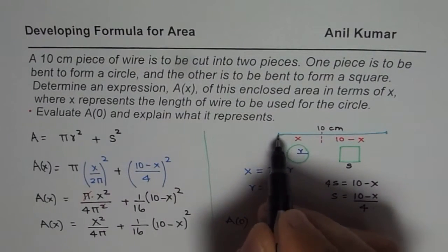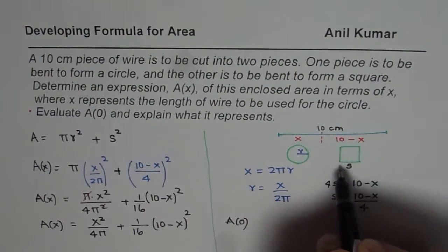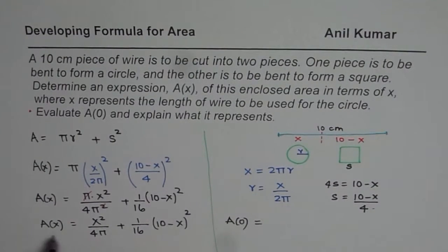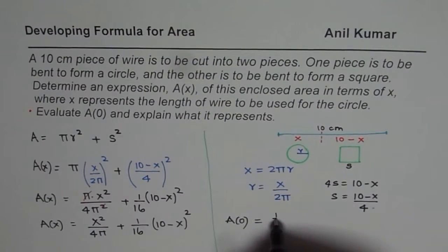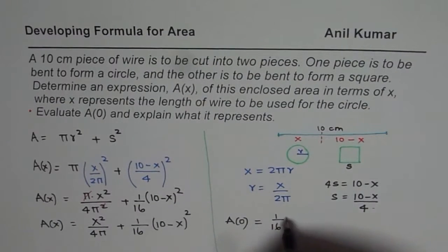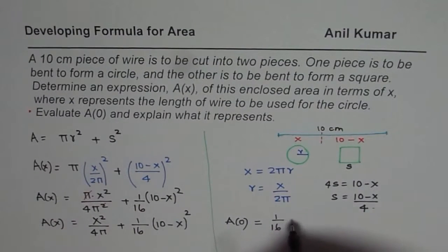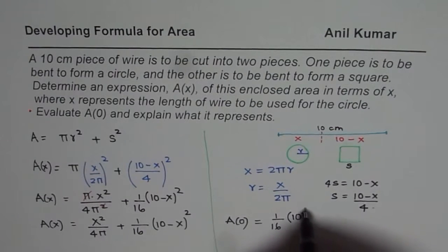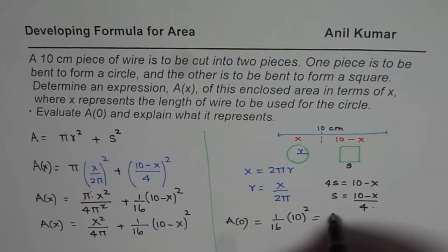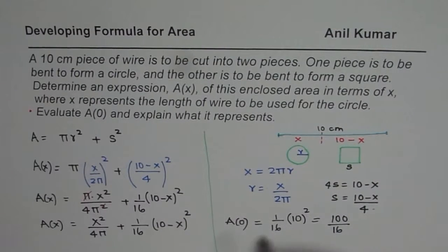So with x is zero, what do we get? The area will be 1 over 16. When x is zero, this part will be zero, times 10 square. So that is 100 over 16. So that is the area.